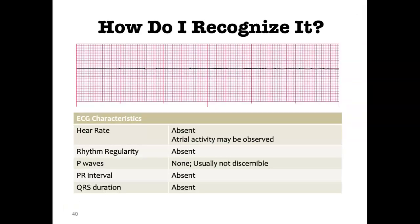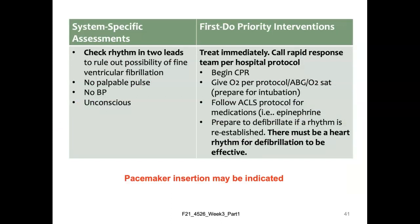To recognize asystole: heart rate is absent, atrial activity may occasionally be observed but is not a sustainable rhythm, rhythm regularity is absent, P waves are usually not discernible, PR interval is absent, and QRS is absent. Check the rhythm in two leads to rule out fine ventricular fibrillation. There is no palpable pulse, no blood pressure, and the patient is unconscious. Treatment: call a code and the rapid response team, begin CPR, give oxygen, perform ABGs, prepare for intubation, and follow ACLS protocol — typically including epinephrine. Prepare to defibrillate if a rhythm is reestablished. Pacemaker insertion may also be indicated.